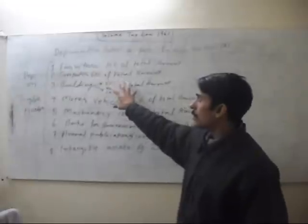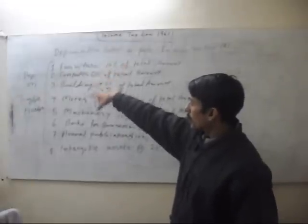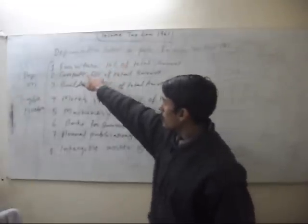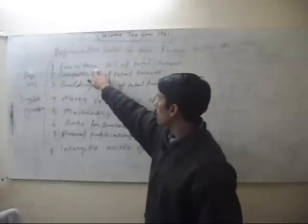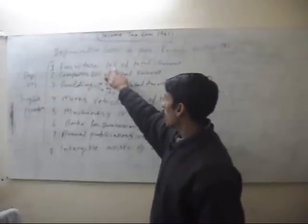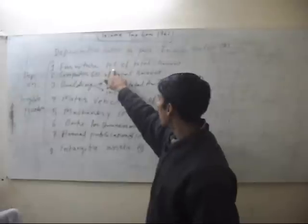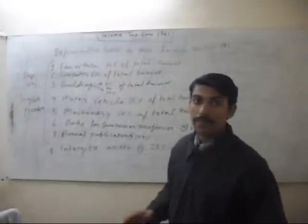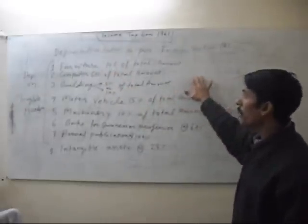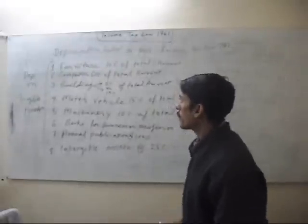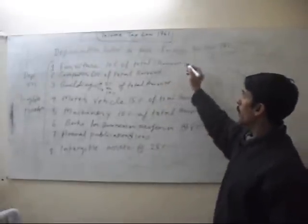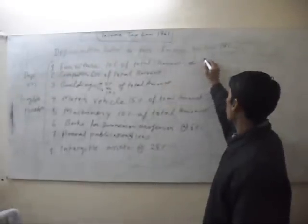In tangible assets, these are the rates. First, for furniture, depreciation rate is 10 percent of total amount. If furniture's value is 10,000, then 10 percent depreciation will be 1,000.